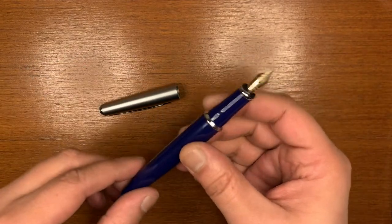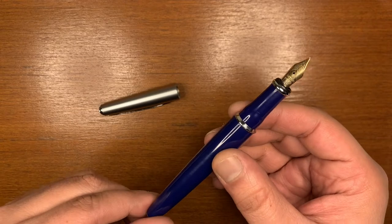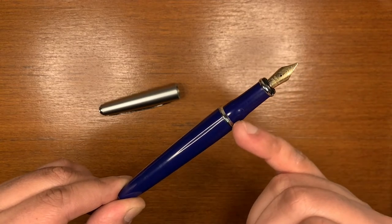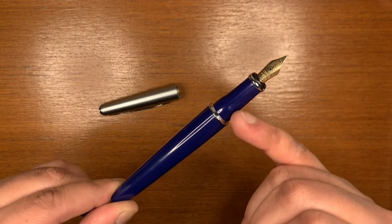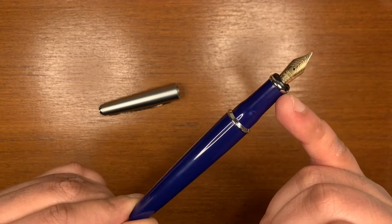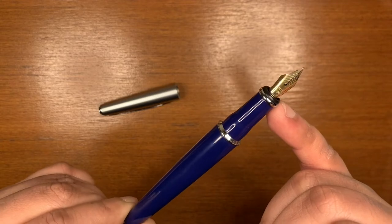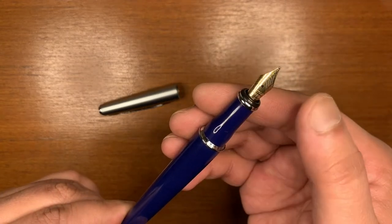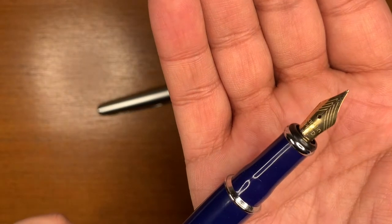It's a snap-on cap and here's the section. It's a fairly comfortable section with this bulbous bit over here and then it flares down. It has this sort of chrome ring over here and then we move on to the nib. Let's take a closer look.